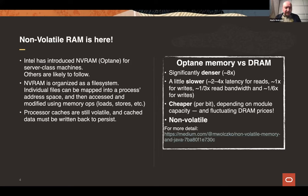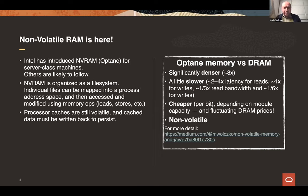Not a lot of programmers seem to appreciate that non-volatile RAM is already here. You can go out and buy an Intel server-based machine with memory modules under their brand name Optane, which gives you non-volatile memory. There's a lot to say about this technology, but I'll keep it very brief. The short thumbnail sketch is that this memory is significantly denser than DRAM inherently because of the technology, so you can put a lot more memory inside a box.